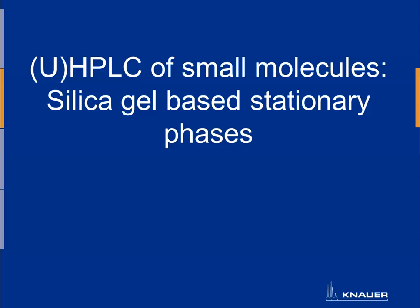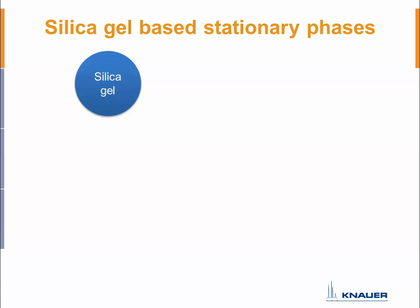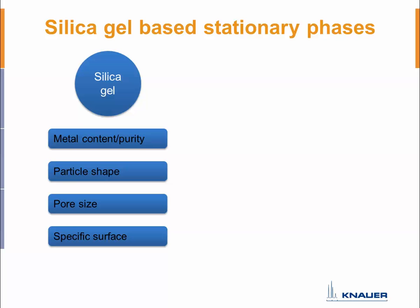When talking about silica gel based stationary phases, we have to take into account several parameters to compare them or to understand their selectivity. First, the ground silica gel has parameters like metal content, which defines its purity. You also have particle shape, pore size, and specific surface area. Surface area is linked to pore size — when pore size gets smaller, the surface gets bigger because there are more pores per particle.